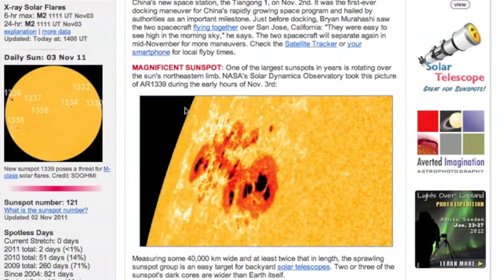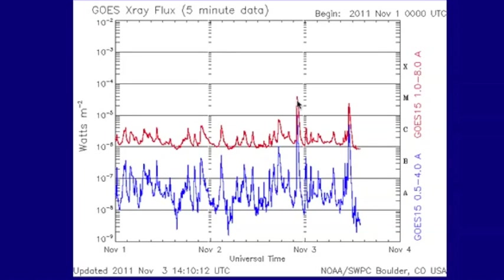The focus of this is going to be sunspot 11339, coming over the northeastern limb there. It's been responsible for two M flares so far, an M4 last night and an M2 not too long ago.